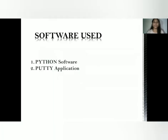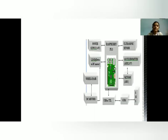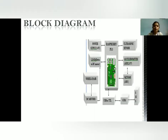Moving towards the software used: since we are using the Raspberry Pi, programming is done in the Python language, so we are using the Python software. In order to have wireless connectivity, we will be using the PuTTY application. Now let us understand the block diagram.